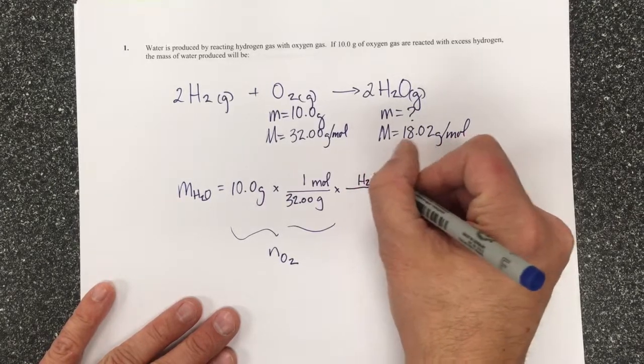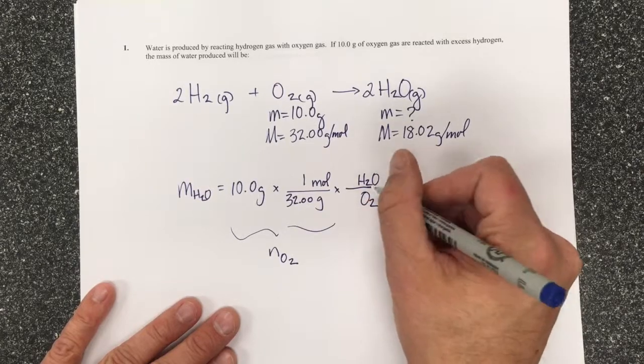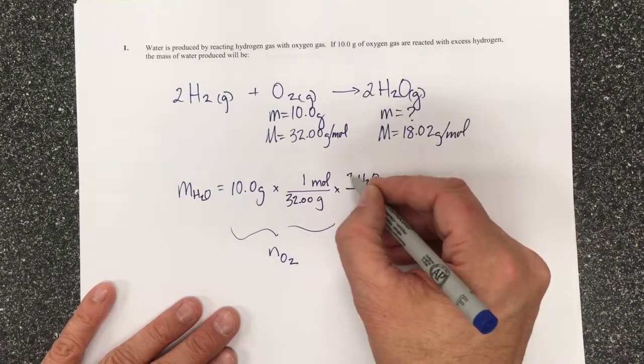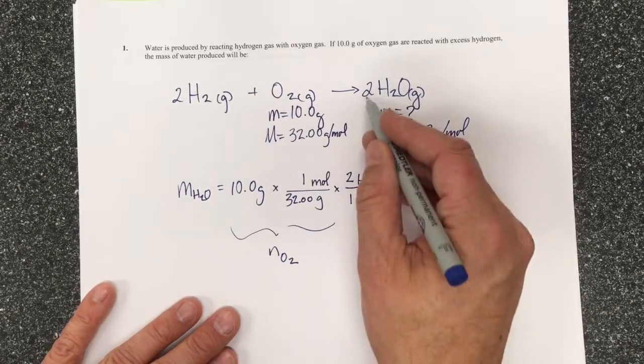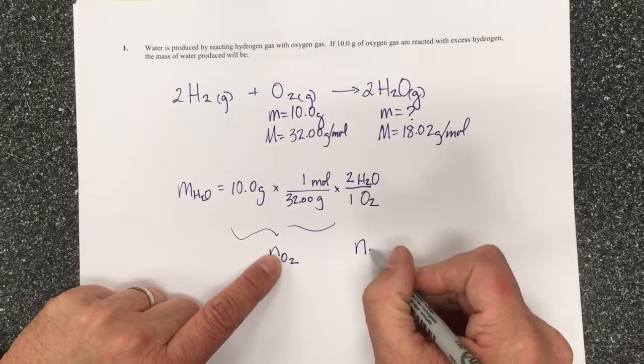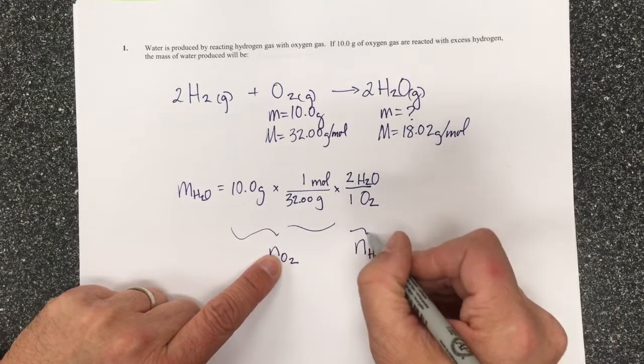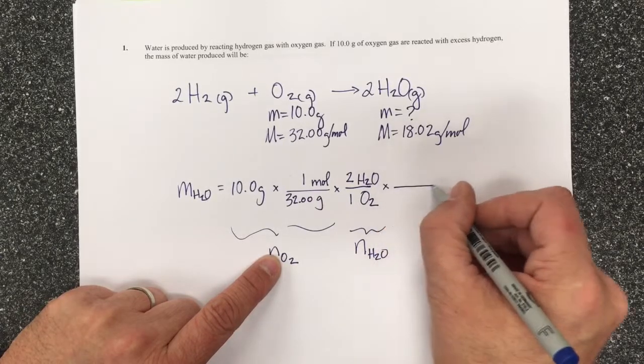So I use a conversion factor to change from oxygen to water using the coefficients. The coefficient for oxygen is 1 and for water is 2, and so I'm changing the n of O2 to n of H2O. That's what this step does.